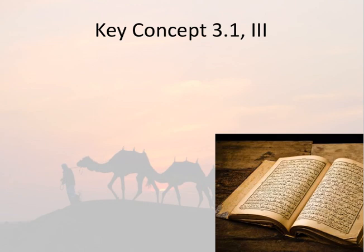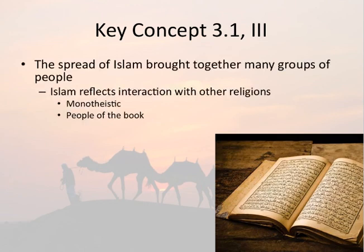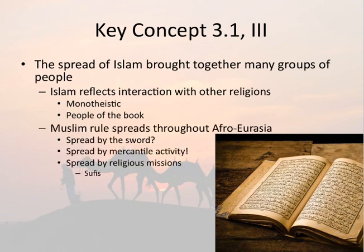Let's talk about some major ideas in the spread of Islam. Islam reflects an interaction with other religions, seeing as it is monotheistic — just like Zoroastrianism, Judaism, and Christianity. Therefore, most Muslims see those other religions as people of the book and extend a fair amount of tolerance to them. Muslim rule very quickly spreads throughout Afro-Eurasia. While some say it was spread by the sword, initially that might be the case; however, it spread most effectively and prominently by mercantile activity.